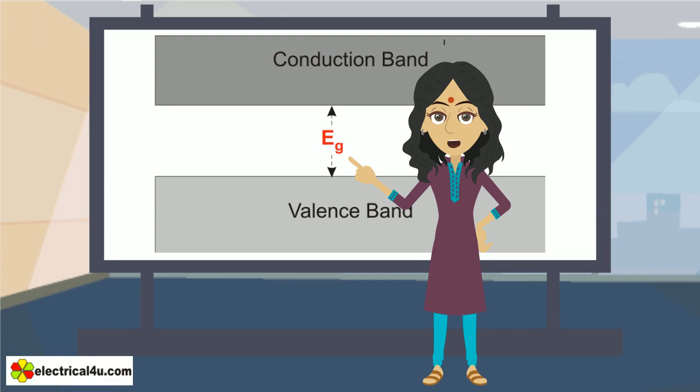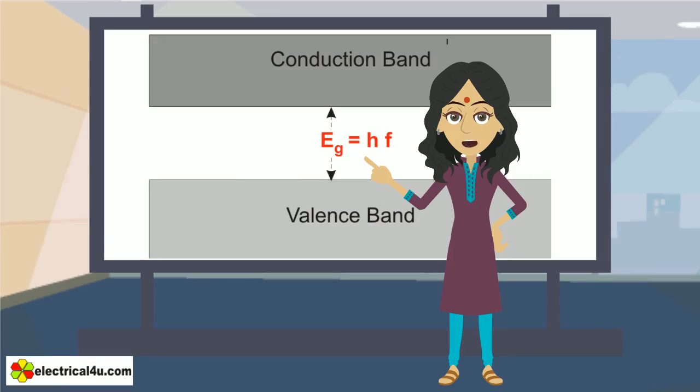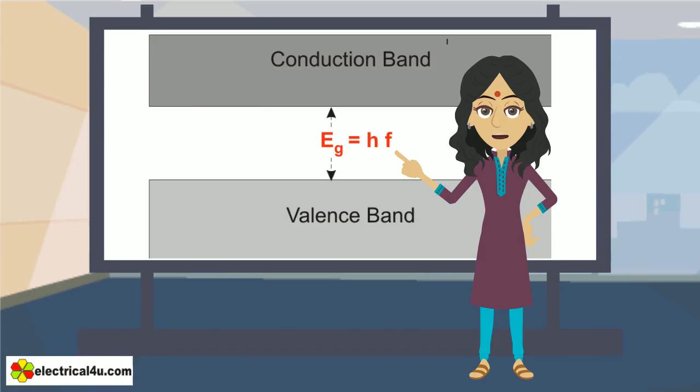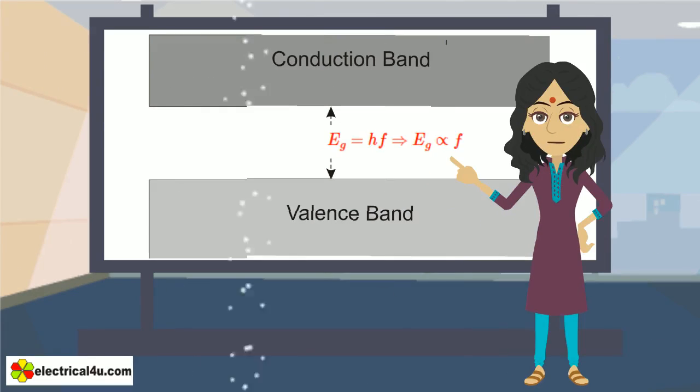Now consider the energy gap is E_G. Hence, E_G equals H·F where H is Planck constant and F is the frequency of electromagnetic radiation. Now it can be said that E_G is proportional to F.